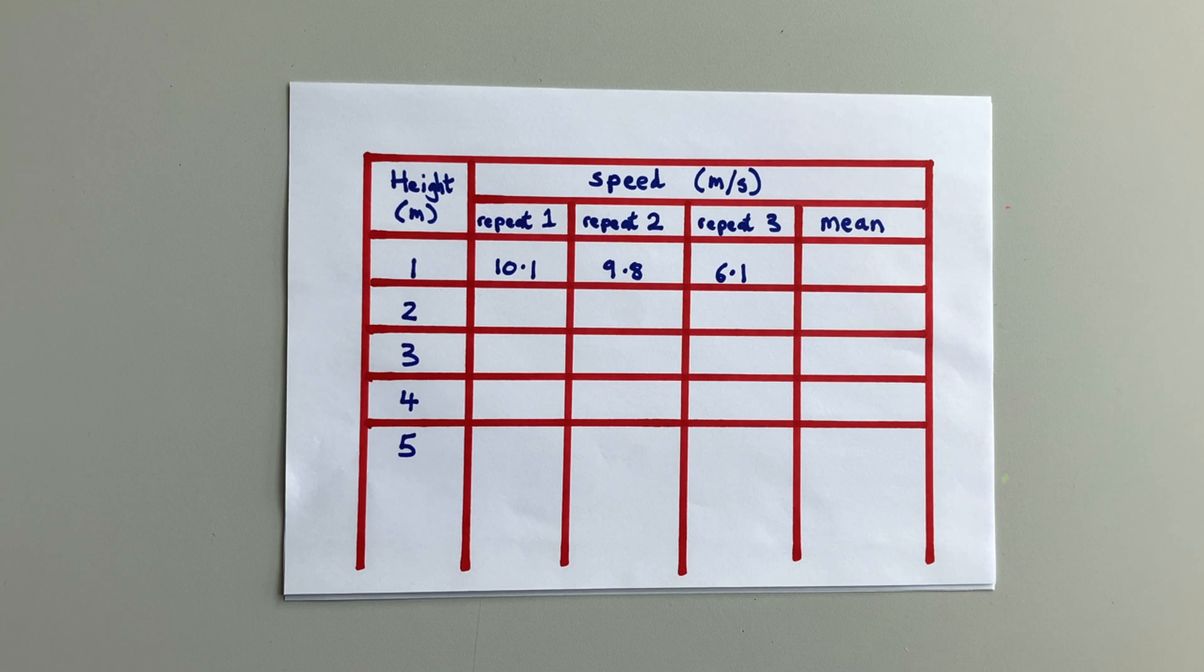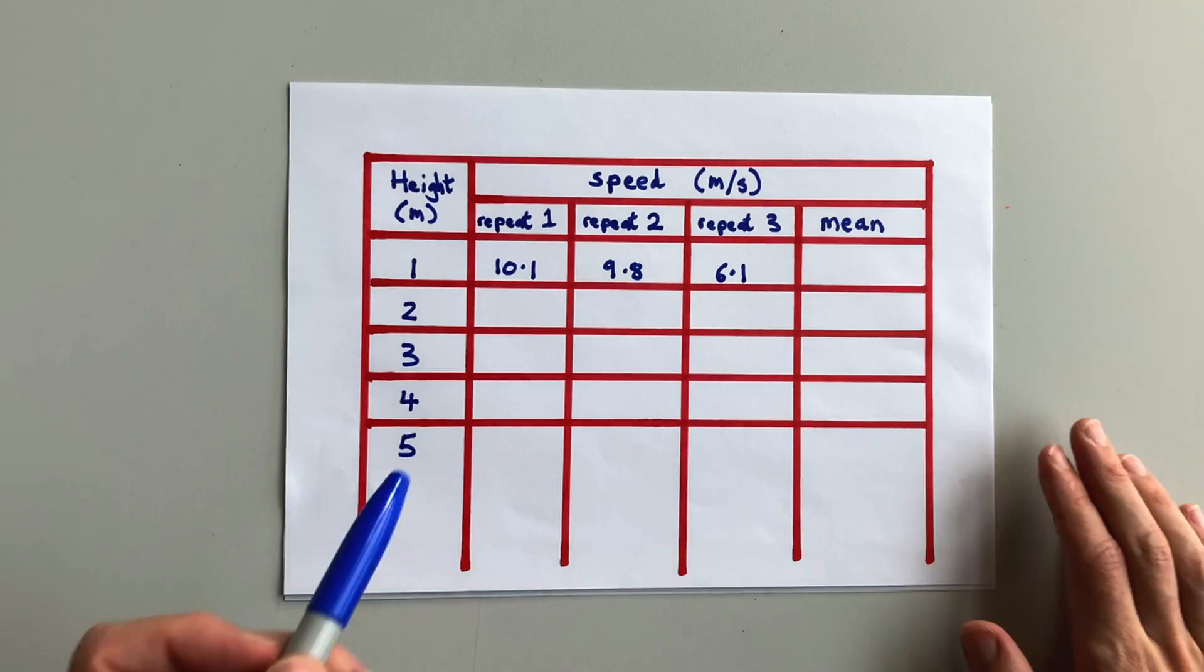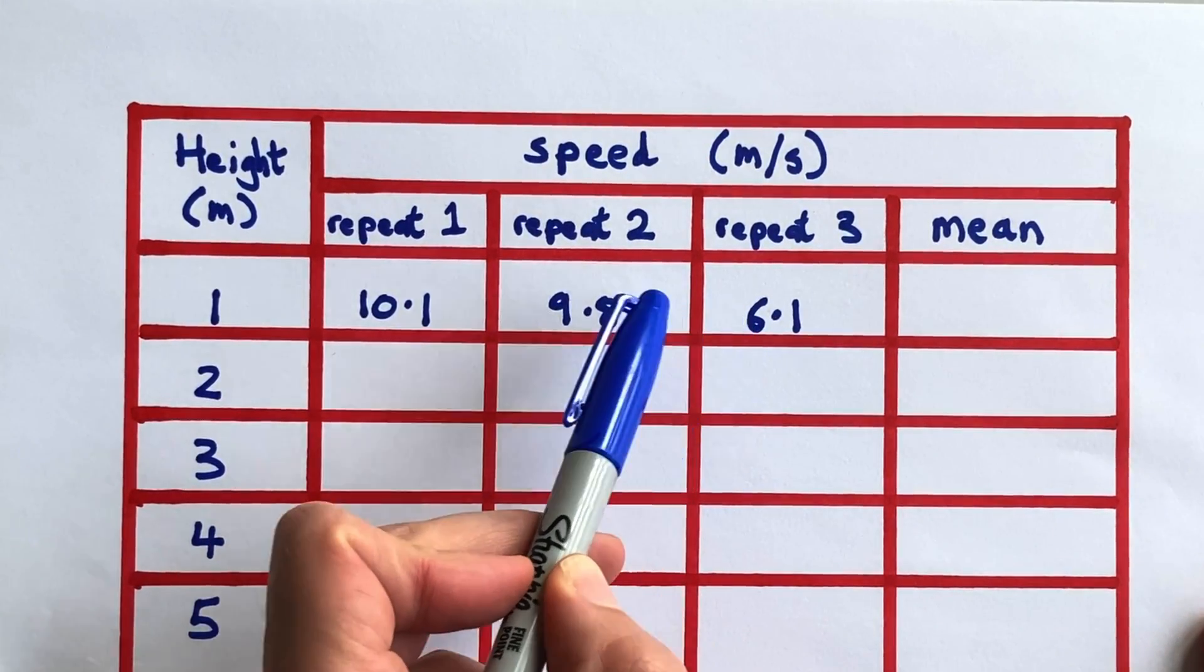So spotting anomalies is like playing spot the difference. So how do you play spot the difference with a results table? First, you have to do at least three repeat readings. Then, you compare the numbers on each row, looking to see if one number is different from the other two.